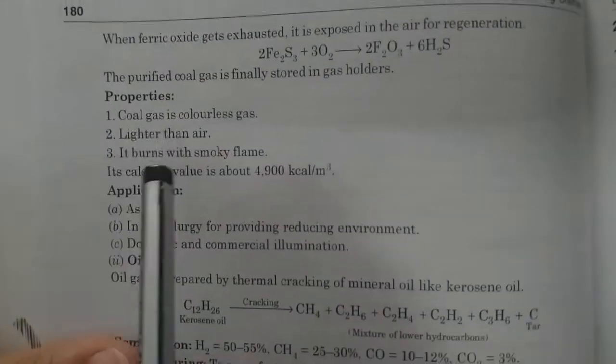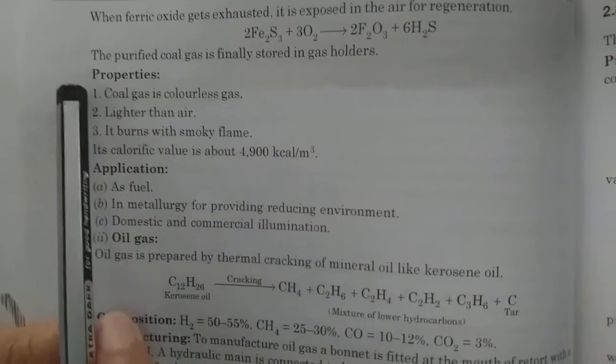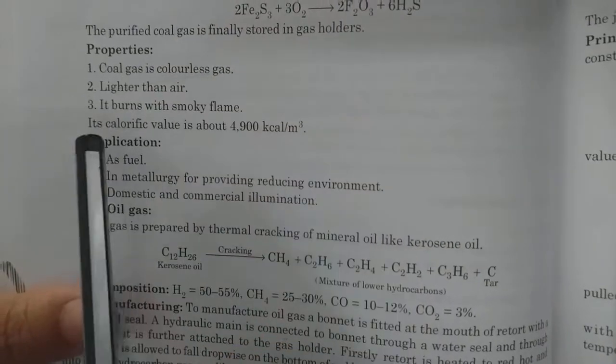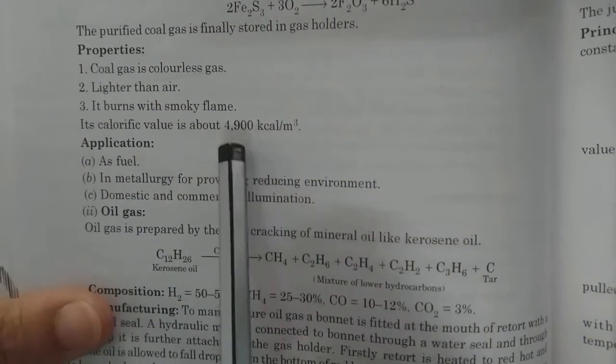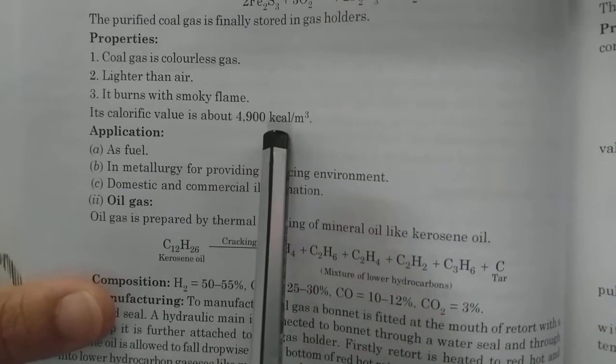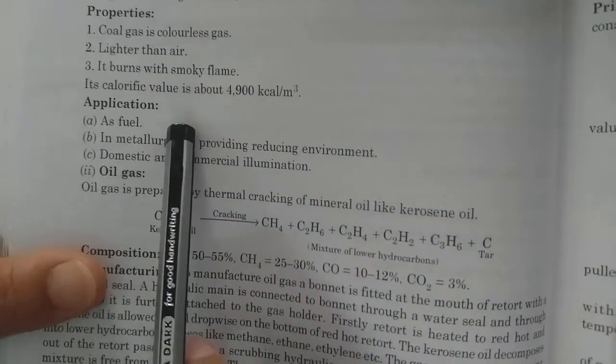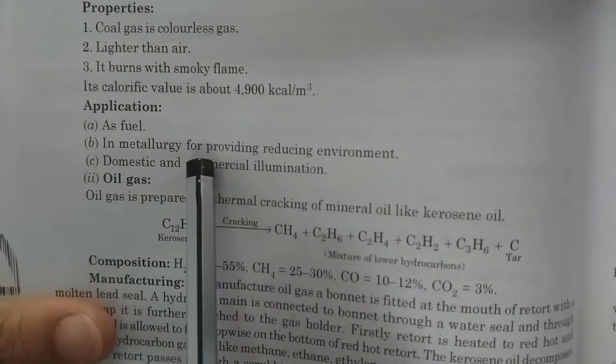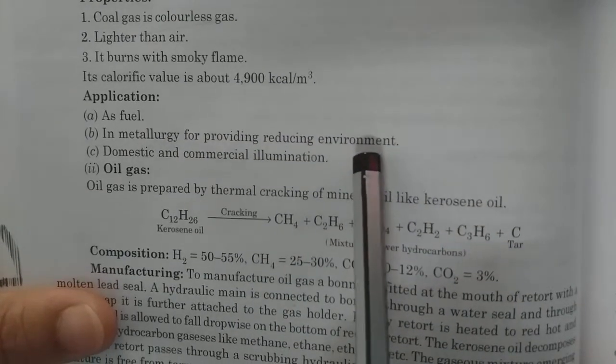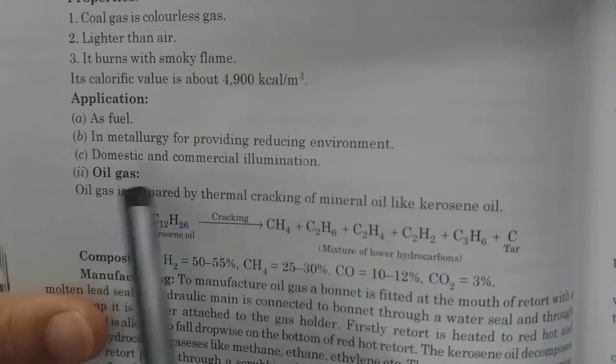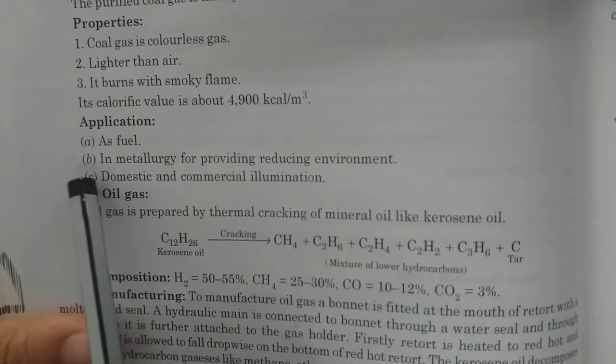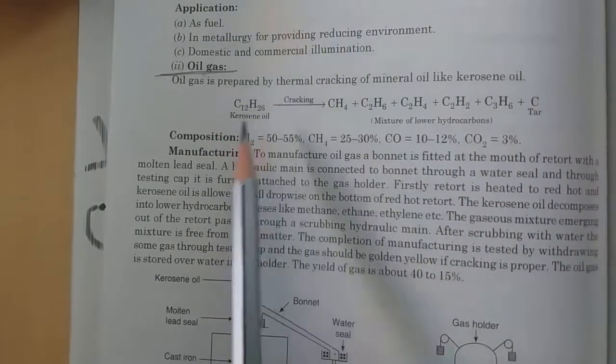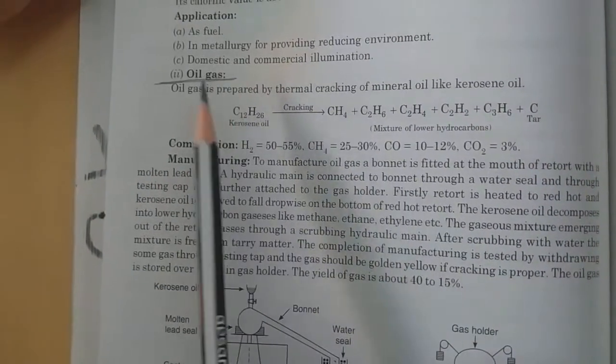After the catalytic chamber, the gas is collected by water displacement method. Now we will discuss properties of coal gas. It is a colorless gas, lighter than air. It burns with smoky flame. The calorific value of this gas is 4900 kilocalorie per meter cube. Application: it is used as a fuel in metallurgy for providing reducing environment. It is also used in domestic and commercial illumination. These are the applications of coal gas.